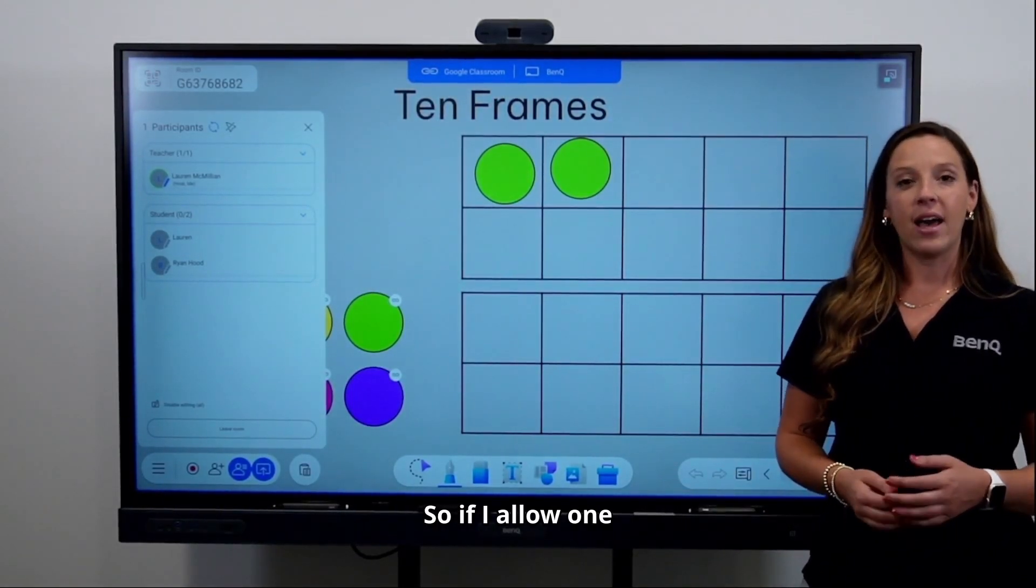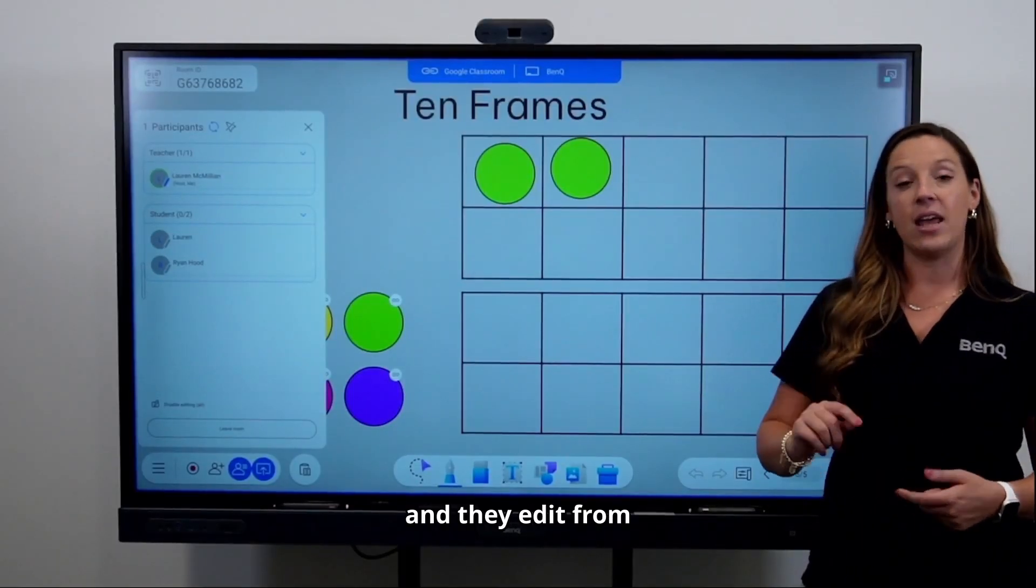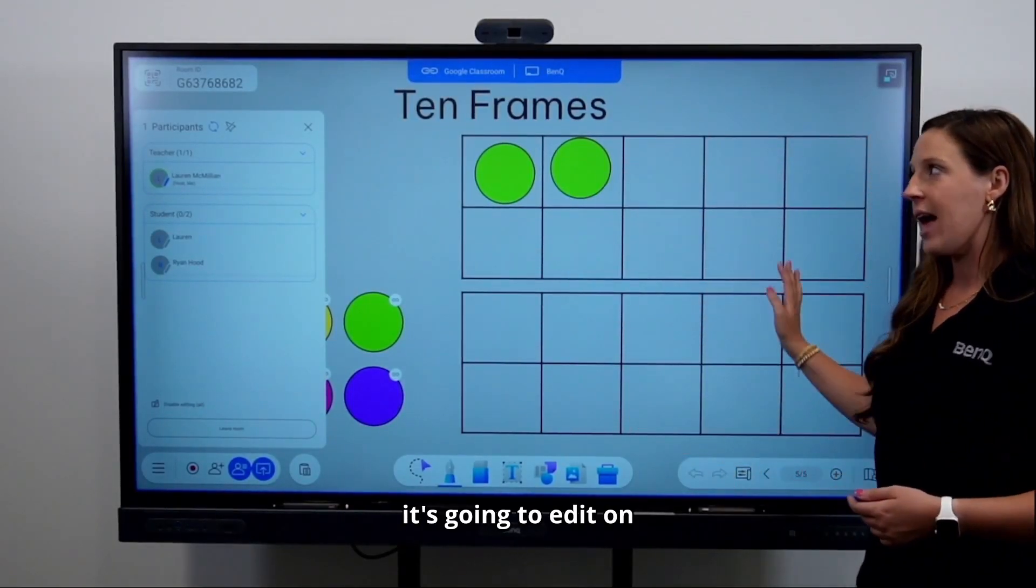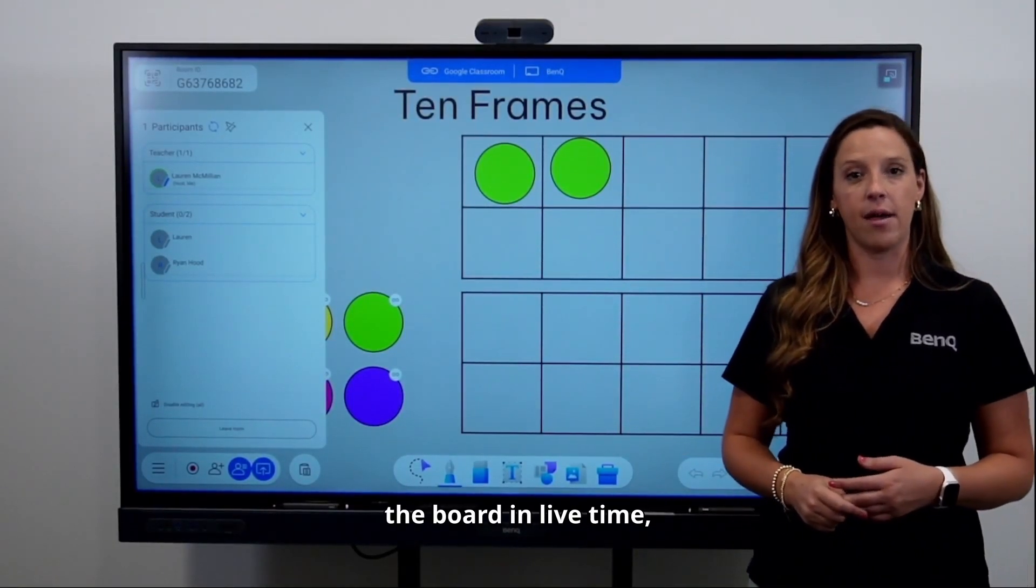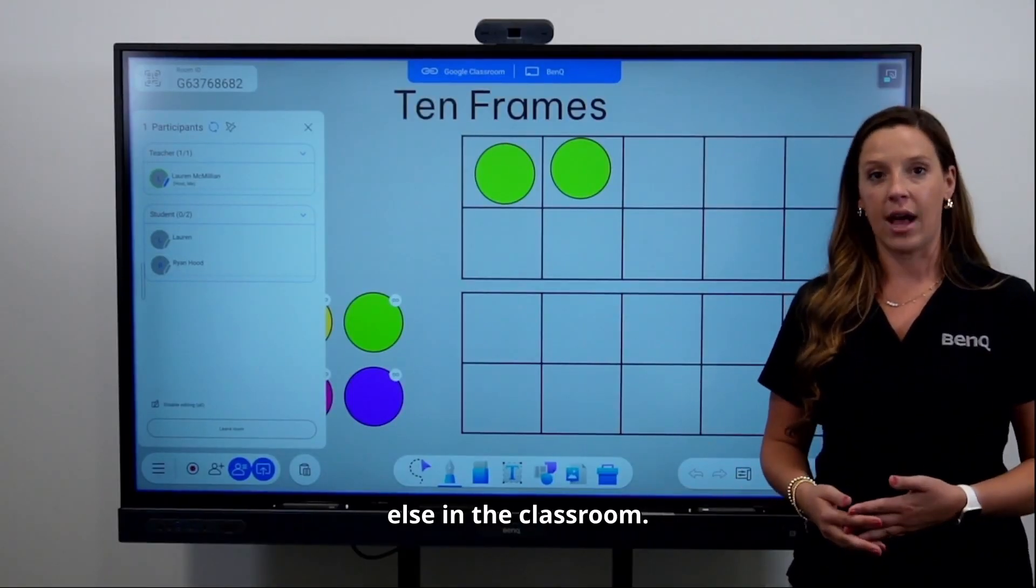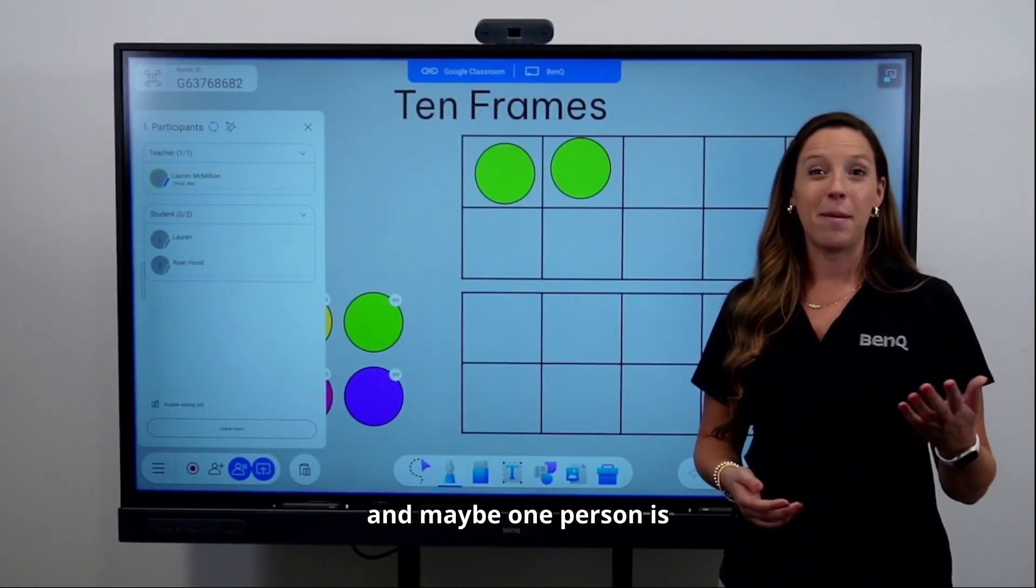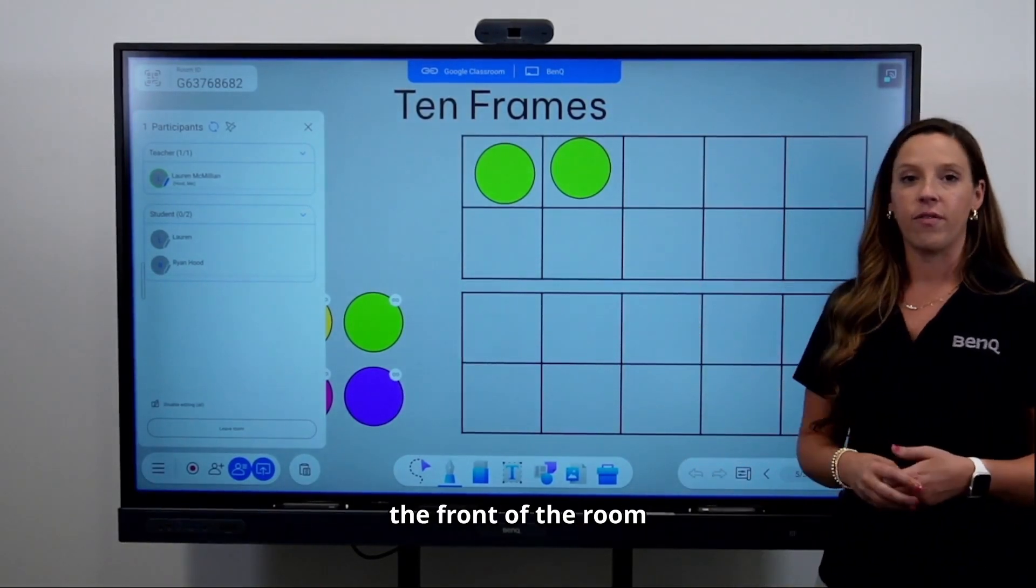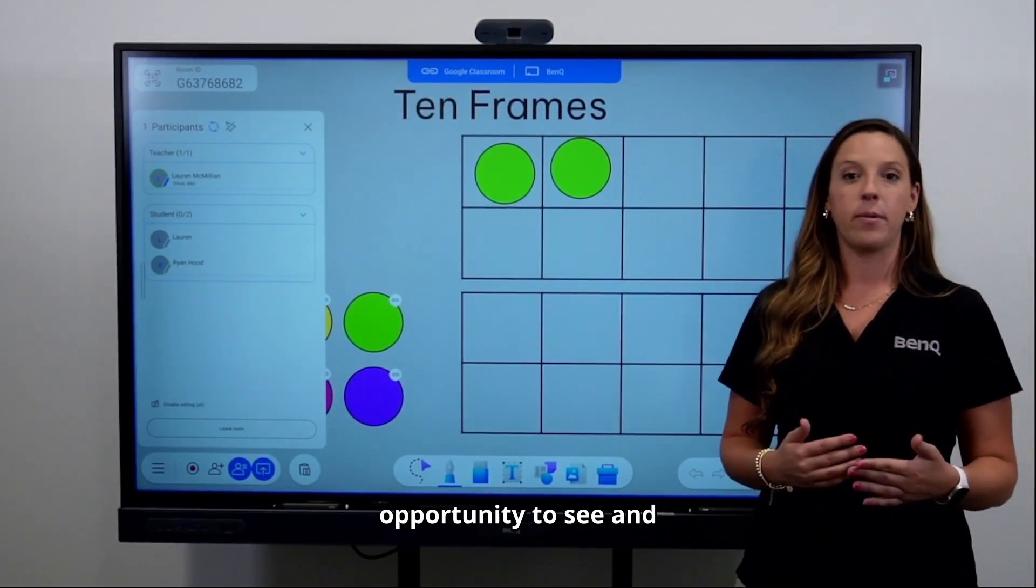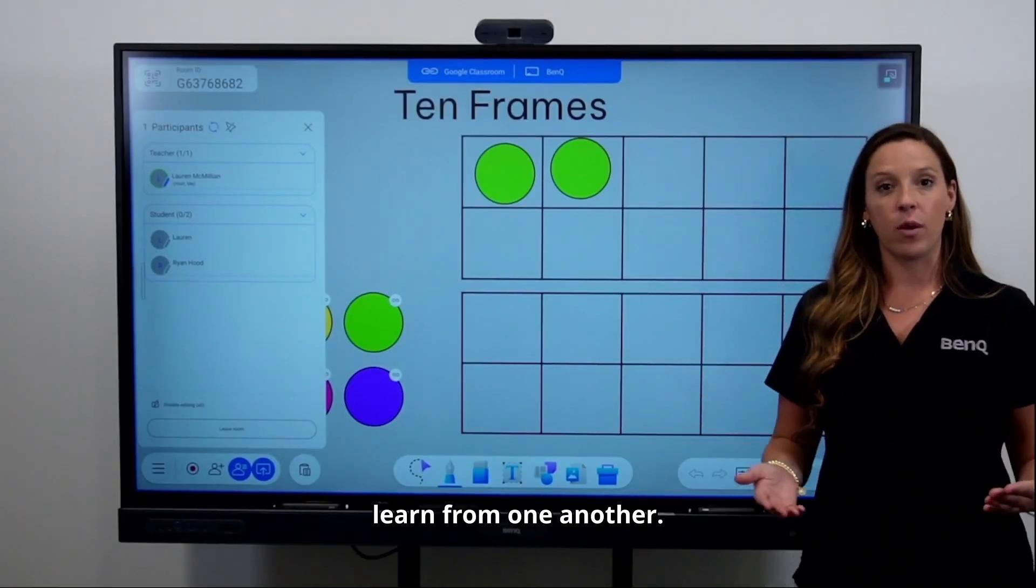So if I allow one person to edit and they edit from their computer, it's going to edit on the board in live time, along with everyone else in the classroom. This is a great option when you have students working in groups and maybe one person is going to be editing on the front of the room, so everyone has an opportunity to see and learn from one another.